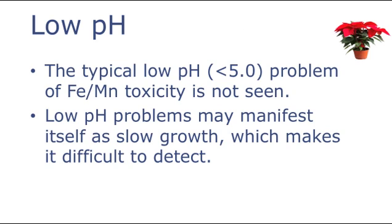At low pH, we did not observe any symptoms of leaf discoloration, such as lower leaf bronzing or black spotting, as one would expect with other plants when grown at pH levels below 5.0. Slow growth may be difficult to observe with poinsettias, which makes it important to conduct regular substrate pH tests to ensure that the pH values are within the optimal ranges.